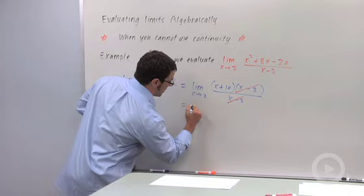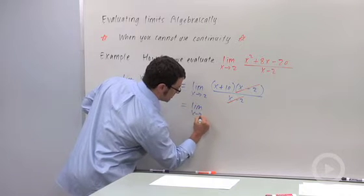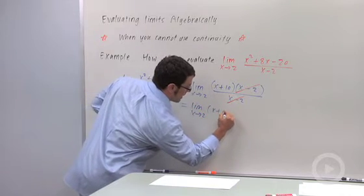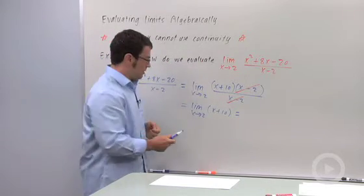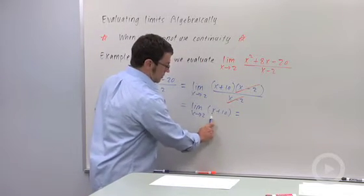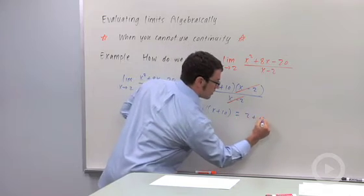And that gives us the limit as x approaches 2 of x plus 10. And that limit we can evaluate using continuity, right? You can just plug in 2. And you get 2 plus 10, which is 12.